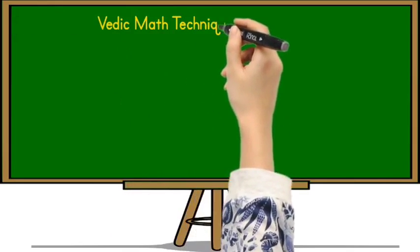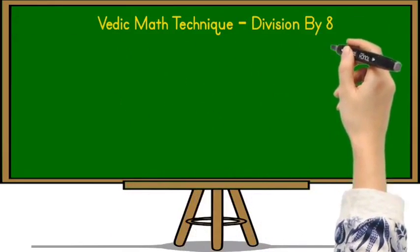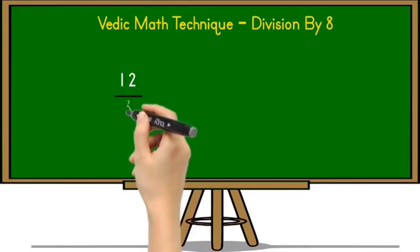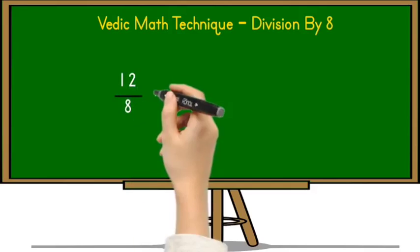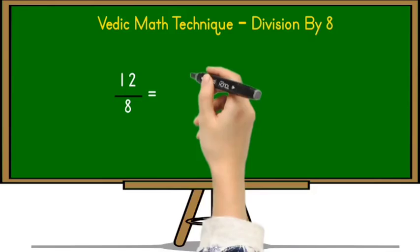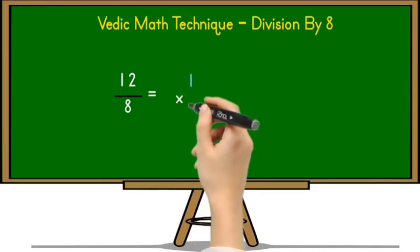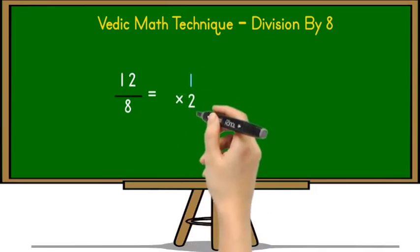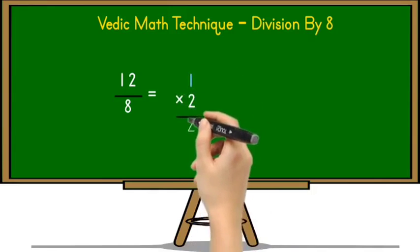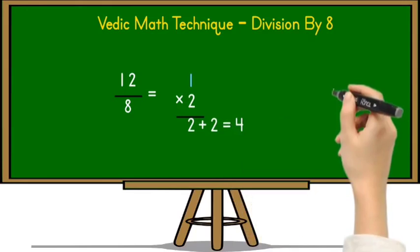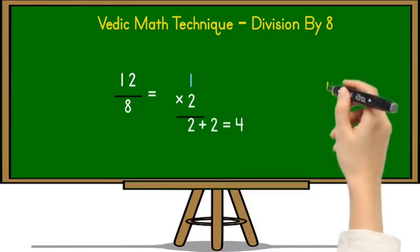Let's solve the first example on Vedic math technique for division by 8. The example is 12 divided by 8. To solve this example using Vedic math technique, we have to follow some steps. First, write down the tens place digit, 1, and multiply it with 2. So 1 multiplied by 2 equals 2. Now we have to add the unit place digit of 12, that is 2, with this 2. So 2 plus 2 equals 4.